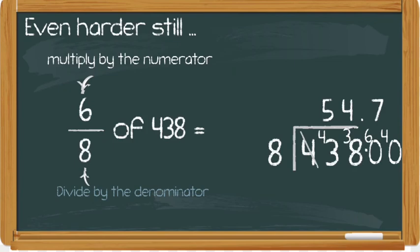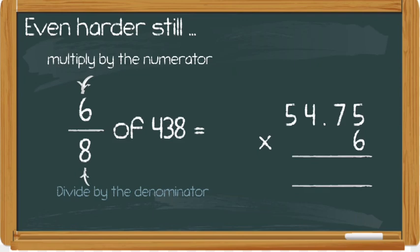Once I've found that number out I then have to do my second step of the problem which is multiply my answer by the numerator. So we've got 54.75 and multiply it by 6 to get 6 eighths, 328.50 or just 328.5 because that 0 has no place value so it doesn't need to be there.